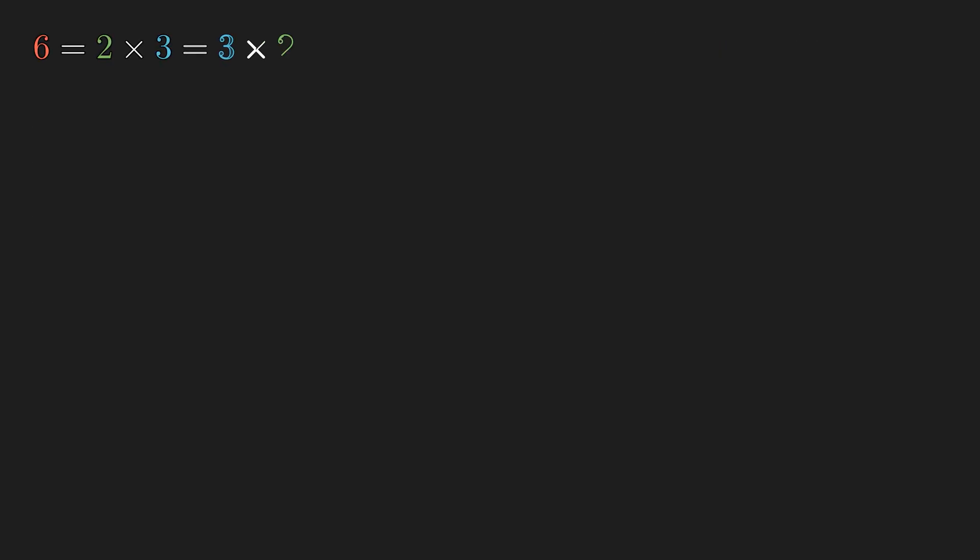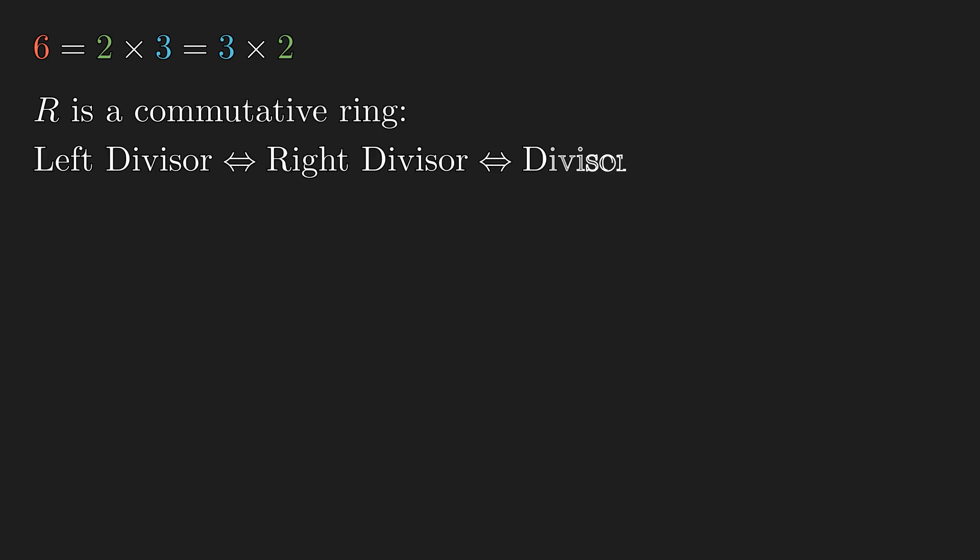Over any commutative rings where the distinction is not necessary, we can just say divisor and multiple without requiring direction. And we use the vertical bar to denote that the first element divides the second. Or in the more familiar passive voice, 6 is divisible by 2. Since every ring has two very special elements, the additive and the multiplicative identity, they give rise to very important divisibility properties in the ring, so we will give them some special names.